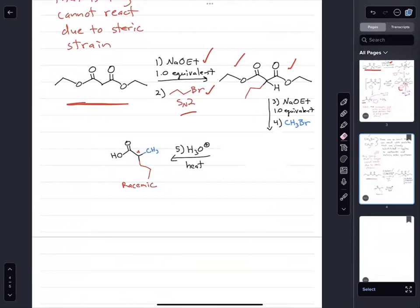But what we're telling you now is that we can use yet another equivalent of sodium ethoxide. And as long as we use either methyl bromide or methyl iodide only, we can actually alkylate again and generate this new species that has two new carbon-carbon bonds. This is still not chiral because the two symmetric esters are still there.